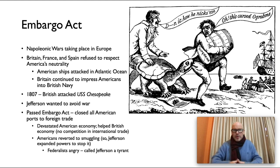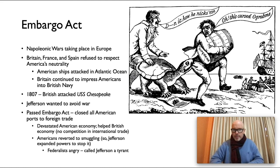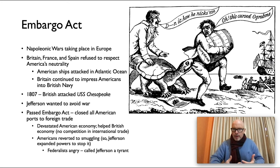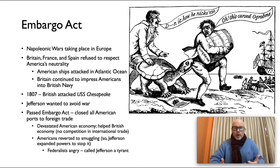In 1807, the British attacked the USS Chesapeake, right near Virginia and the Chesapeake Bay. This angered Americans and many wanted to go to war. But since Washington's Proclamation of Neutrality, the United States had been a neutral country, believing it was best to stay out of foreign affairs and avoid wars in Europe that had nothing to do with the United States. Jefferson didn't want to go to war either, so he passed the Embargo Act, which closed all American ports to foreign trade.